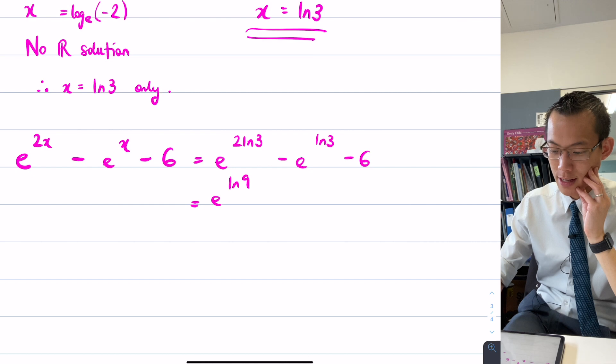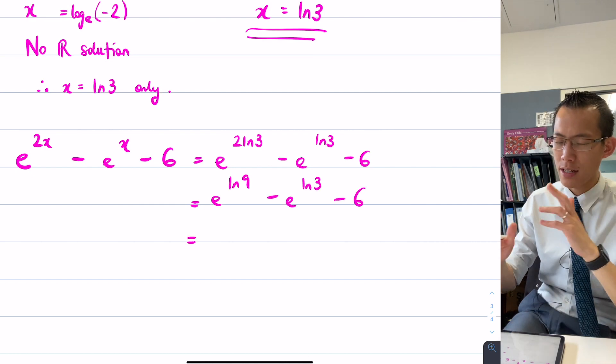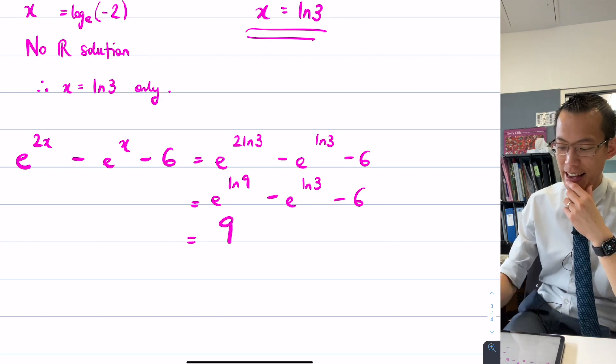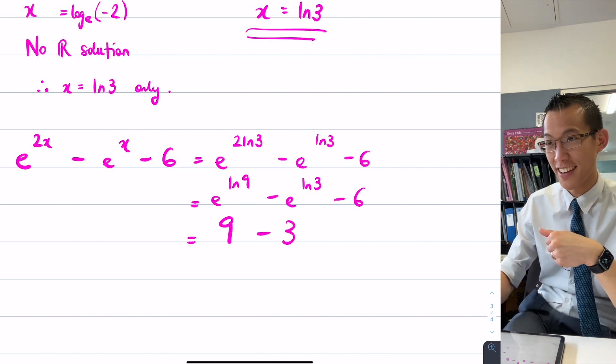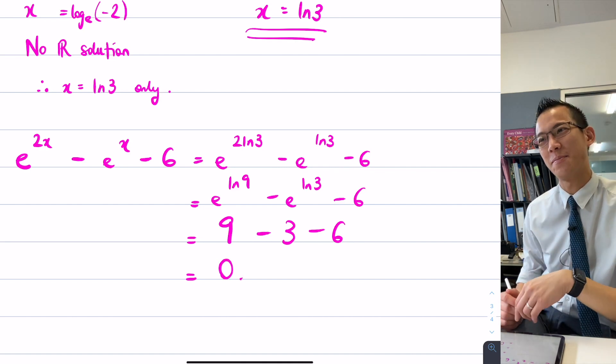Very good. So that's e to the log nine, take away e to the log three, take away six. But e to the log nine is just nine. And then, well, you could do that too. But it's easy just to say e to log three is three. This is zero like I wanted. You see that?